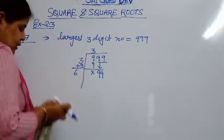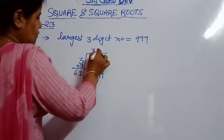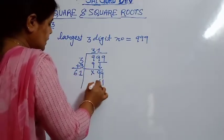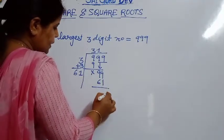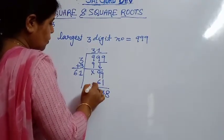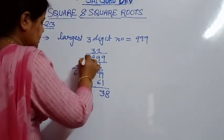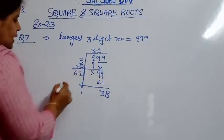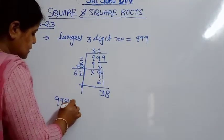So write 1 here and 1 also in the divisor. 1 times 1 is 1, and 1 times 6 gives 61. So 99 minus 61: 9 minus 1 is 8, 9 minus 6 is 3 — remainder is 38. The greatest 3-digit number we started with is 999.